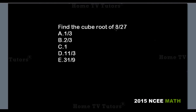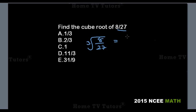Find the cube root of 8 over 27. For the cube root of 8, we look for a number that when multiplied together 3 times gives 8. That number is 2, because 2 times 2 is 4, and 4 times 2 gives 8. So the cube root of 8 is 2.